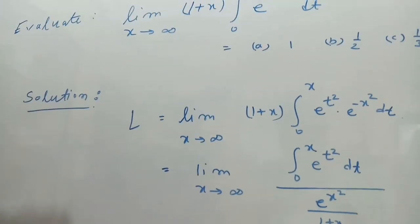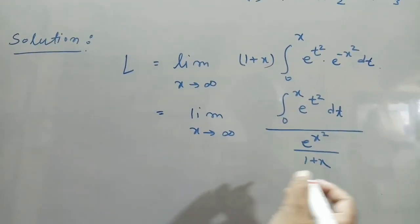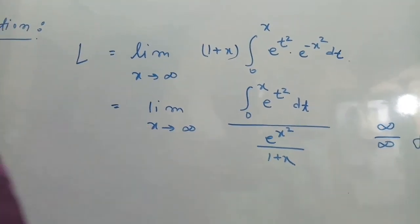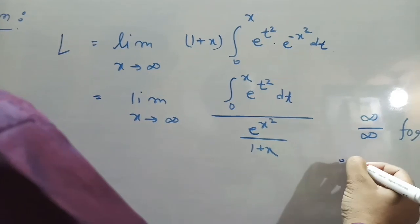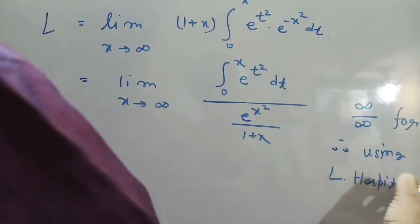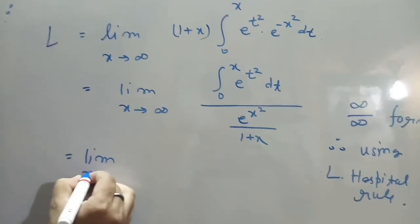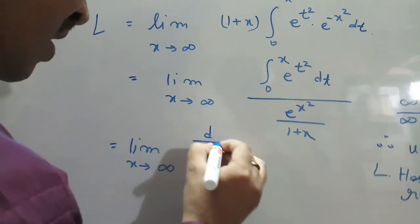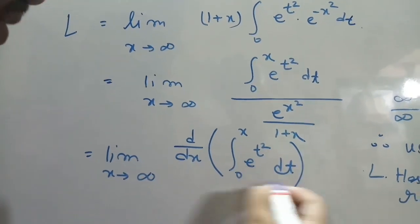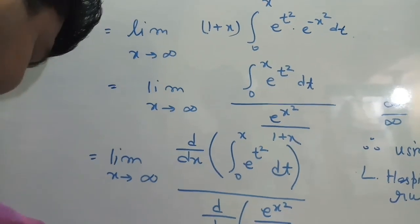This is clearly an infinity over infinity form. Therefore, using L'Hôpital's rule, we take the limit as x tends to infinity of d/dx of the integral from 0 to x of e^(t²) dt, divided by d/dx of e^(x²) / (1 + x).